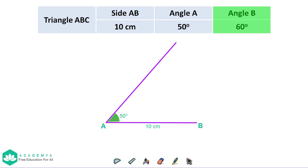Third step, using a protractor, draw the angle B 60 degrees.